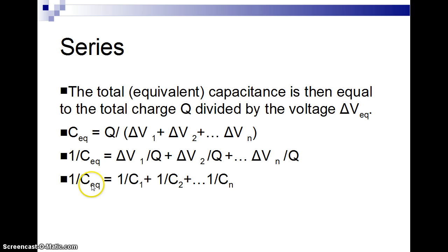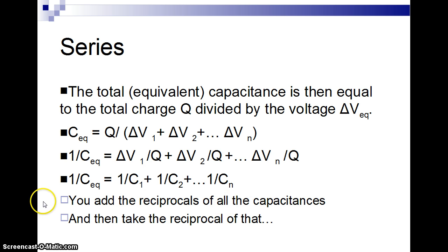That means 1 over the equivalent capacitance is 1 over the first capacitance, 1 over the second, 1 over the third, 1 over the fourth, and so on. But remember, with adding fractions, you don't just add the denominators. What you have to do is either plug in your calculator with everything to the minus 1 power or add with fractions. Basically, you add all the reciprocals of the capacitances and then take the reciprocal of that to find the equivalent capacitance. We'll do a little bit of that in class.